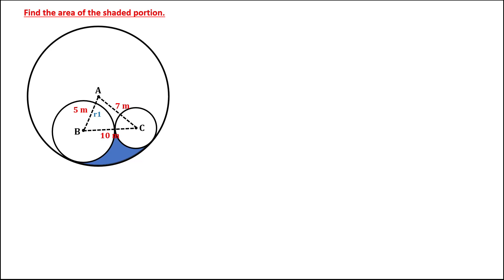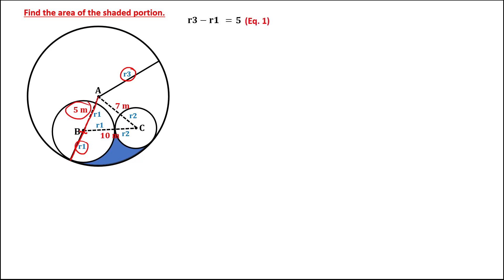We let R1 as the radius of circle B, R2 as the radius of circle C, and R3 as the radius of circle A. Observe that if we extend this line, it is equal to the radius of circle B, and this other line is the radius of circle A, that's R3. So we have R3 minus R1 equals 5, and this is equation number 1.